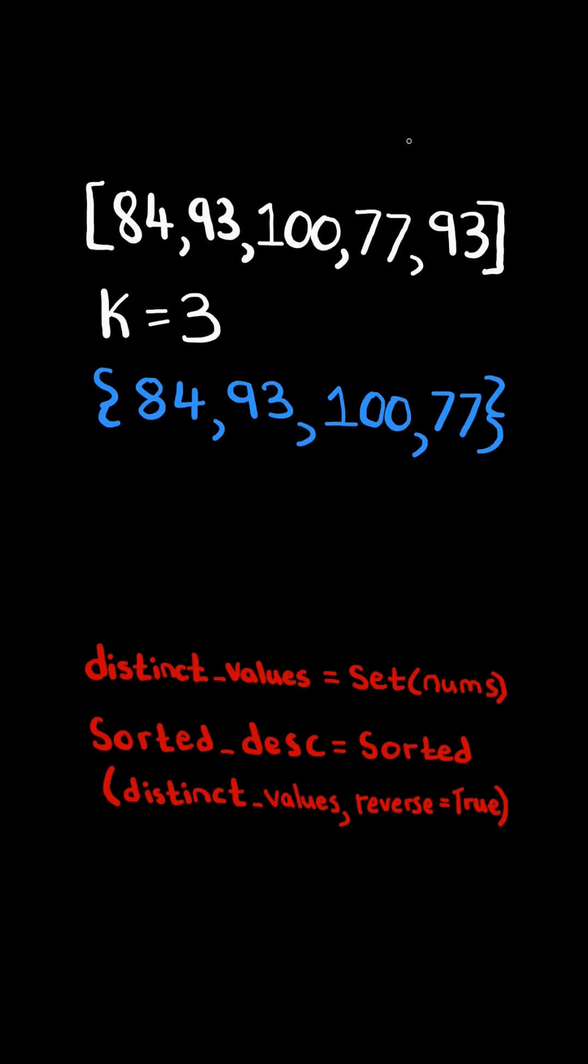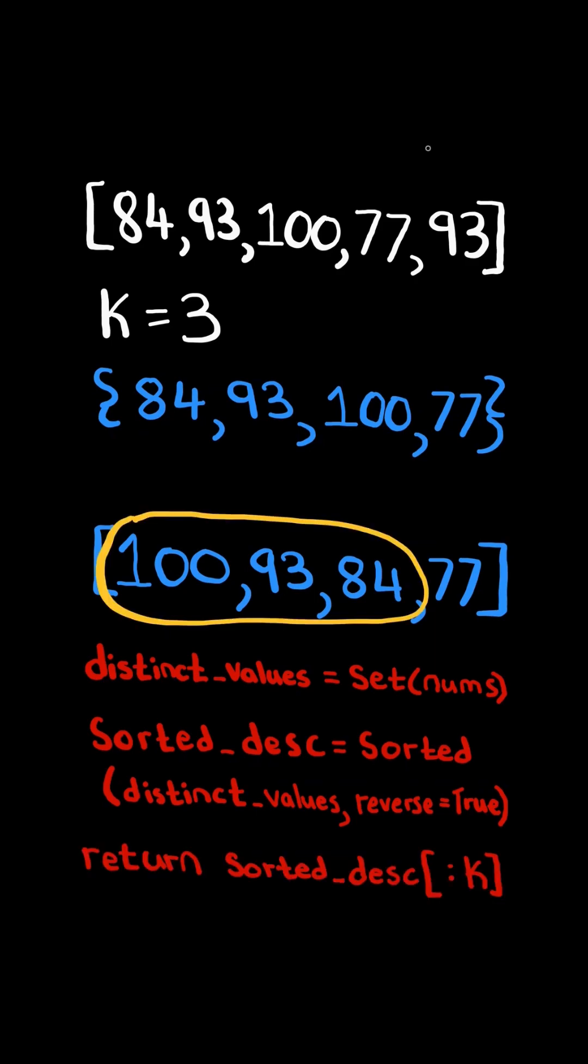We then call the sorted function and sort the set in descending order. This returns a list of the numbers sorted in descending order. And finally, we slice the list to return the k largest numbers.